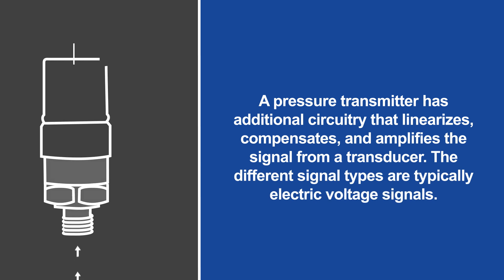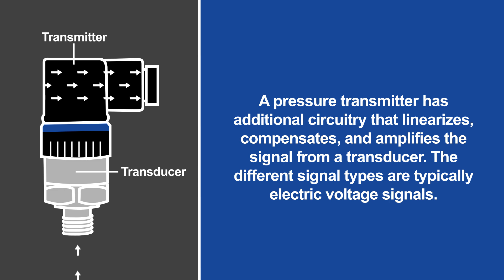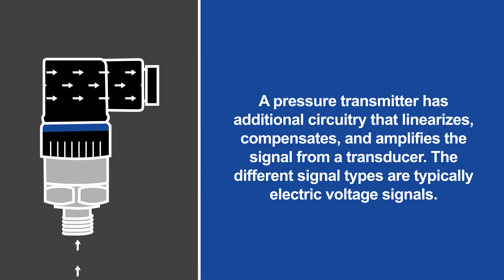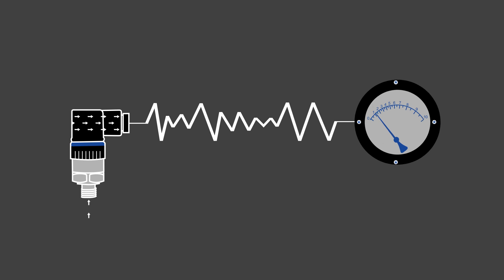A pressure transmitter has additional circuitry that linearizes, compensates, and amplifies the signal from a transducer. The different signal types are typically electric voltage signals. It can send this signal to a remote receiver.